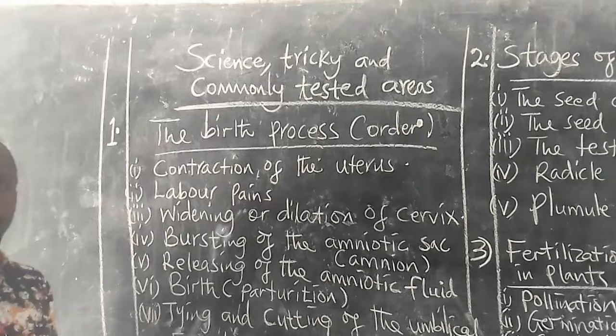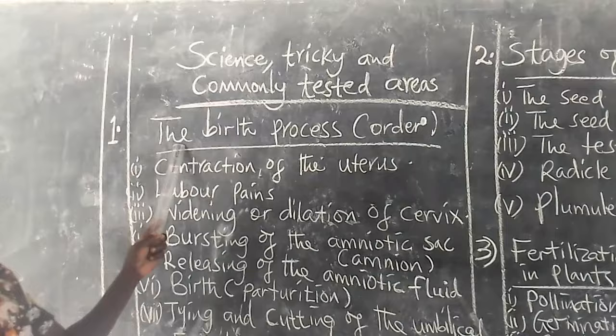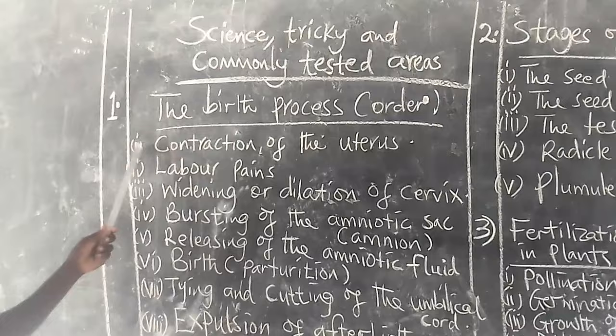Number 1: The birth process. Order of birth. Number 1: contraction of the uterus, leading to labor pains.